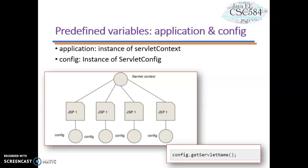Let's look at predefined variables Application and Config. The Application object is a direct wrapper around the javax.servlet.ServletContext object for the generated servlet. This object represents the JSP page through its entire lifecycle. The Config object is an instance of javax.servlet.ServletConfig — a direct wrapper around the servlet config object — and allows the JSP programmer access to initialization parameters such as the path or file location.